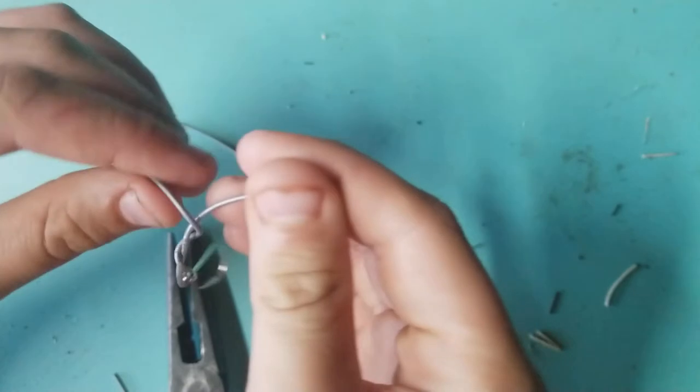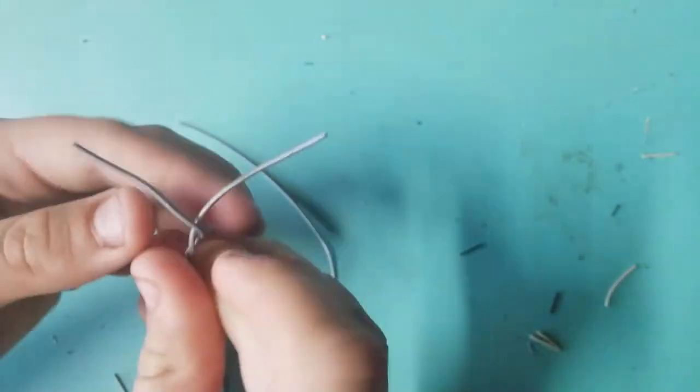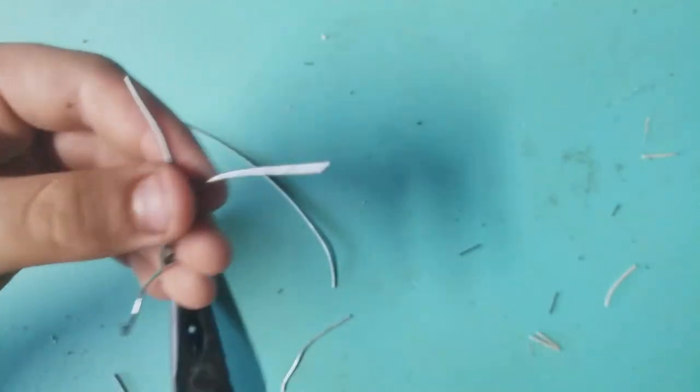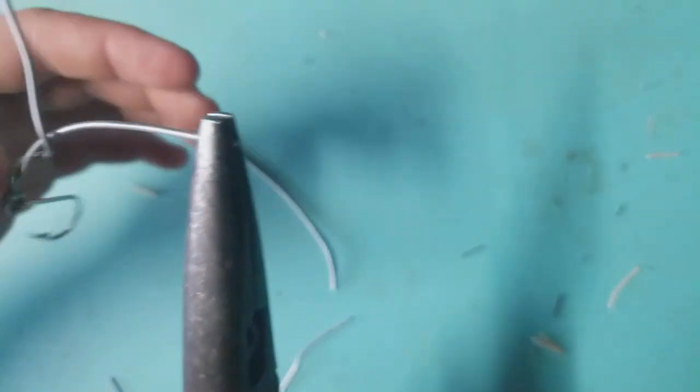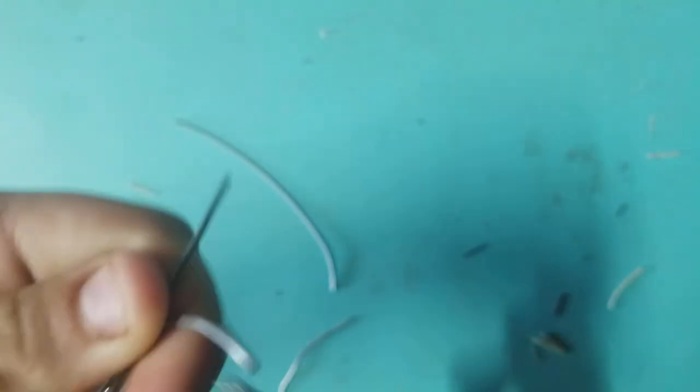Then, taking either end of the stinger you just made, take your pliers and make a pretty big loop, just enough so your barb on your hook can fit under.